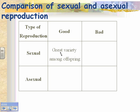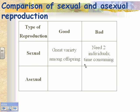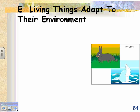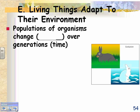To summarize: the good thing about sexual reproduction is there's great variety among the offspring; the bad thing is you need two individuals, it's time consuming, and can be dangerous. The good thing about asexual reproduction is you only need one individual and it's usually fast; the bad thing is there's no variety — all offspring are the same, so any type of selective pressure might kill all of them.